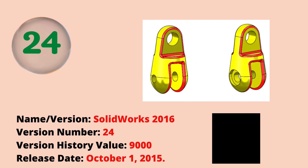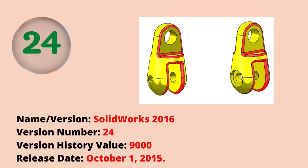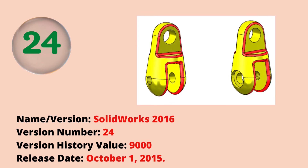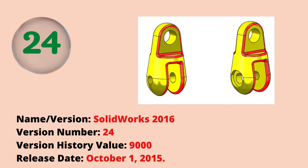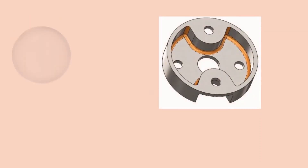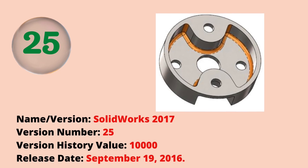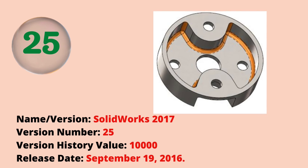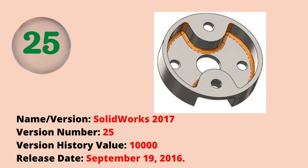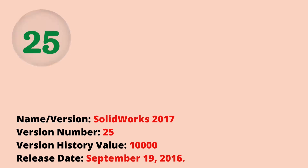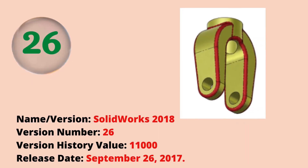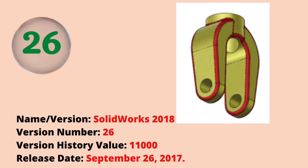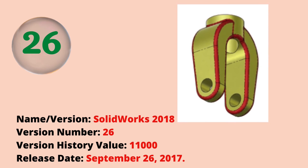The twenty-fourth version was SOLIDWORKS 2016 with a version history value of 9000. The release date was October 1, 2015. The twenty-fifth version was SOLIDWORKS 2017 with a version history value of 10,000. The release date was September 19, 2016.